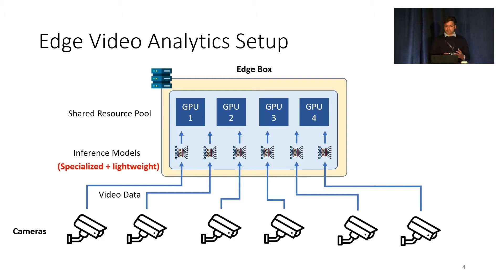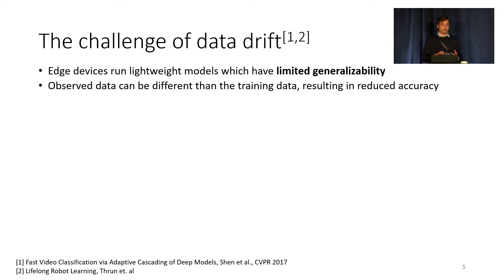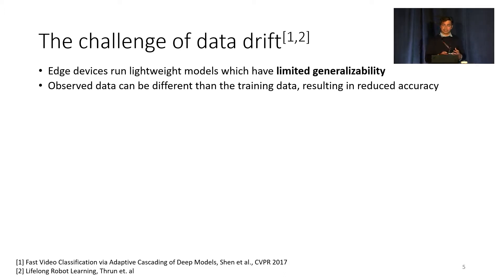Using these lightweight models presents another challenge. When these lightweight models are deployed in the field, they're prone to something we call data drift, which is when live video data diverges significantly from the data the models were trained on. When data drifts, the accuracy of these lightweight models deteriorates.